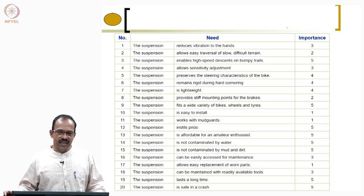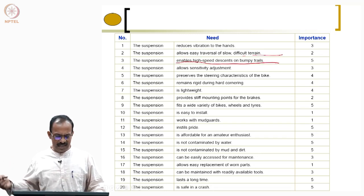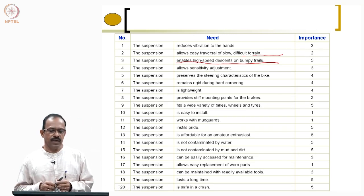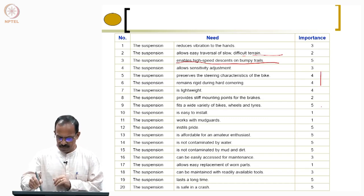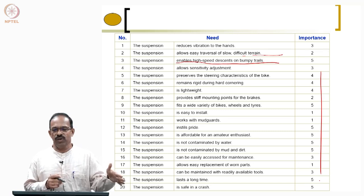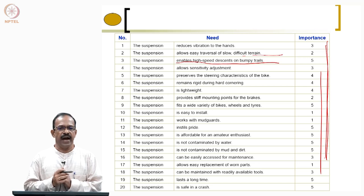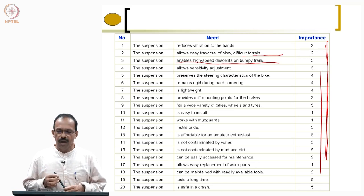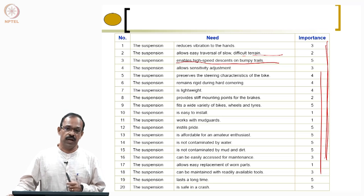Not every need needs to have a totally different ranking — equal rankings can also be given. The design team can take a call on which ones should be addressed first and which can be optional. At the end of all these exercises, you need to have a customer needs list with relative importance — that is the final outcome. You can write the need statement as: 'the suspension reduces vibration to the hands,' 'suspension allows easy traversal of slow difficult terrain,' 'it enables high-speed descents on bumpy trails.' In this case, 20 needs were identified in total.